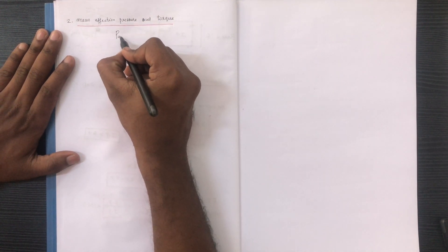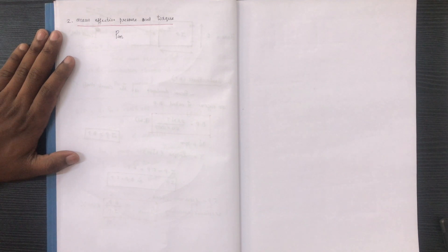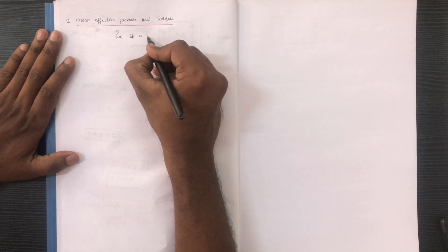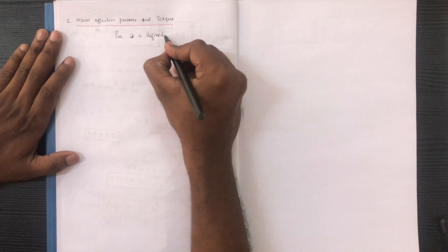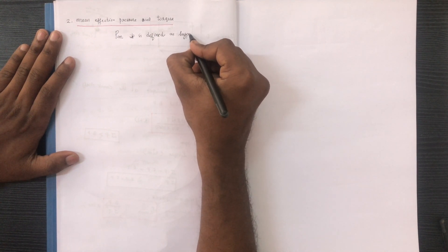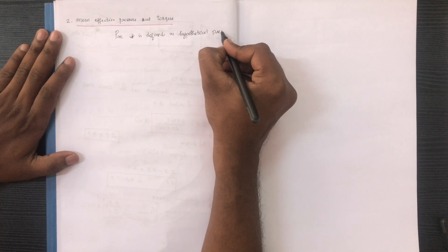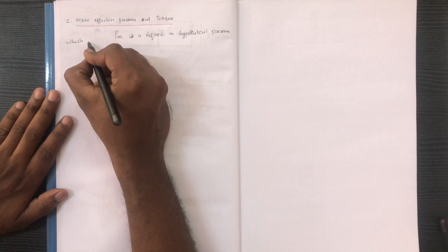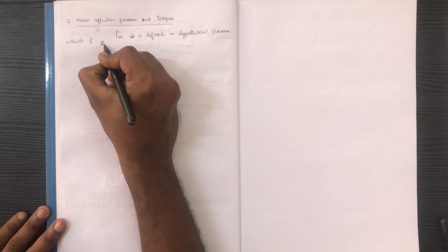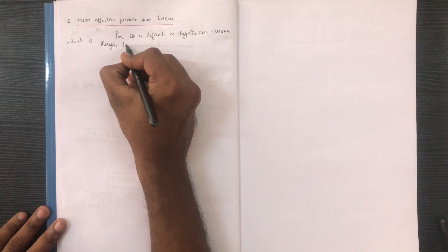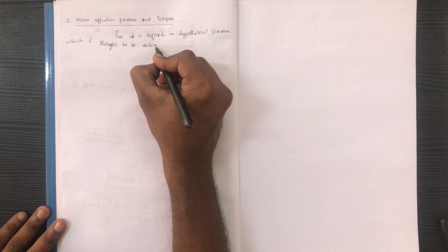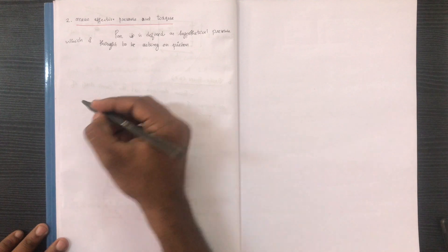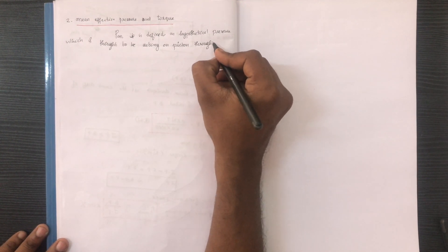Mean effective pressure is defined as a hypothetical pressure which is thought to be acting on the piston throughout the expansion stroke, also called the power stroke. It is this constant hypothetical pressure that forms the basis of engine performance calculations.